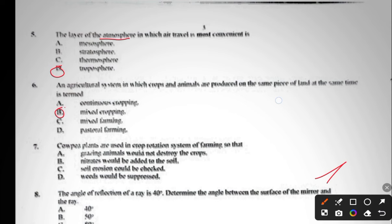Question seven: cowpea plants are used in crop rotation system of farming so that A, grazing animals will not destroy the crops; B, nitrates will be added to the soil; C, soil erosion could be checked; D, weeds could be suppressed.